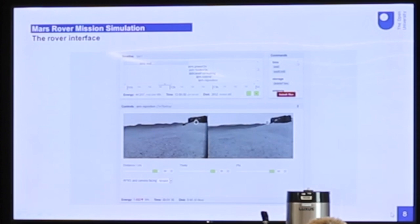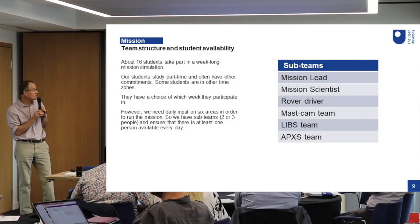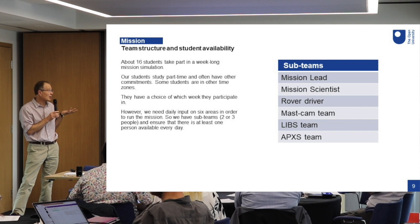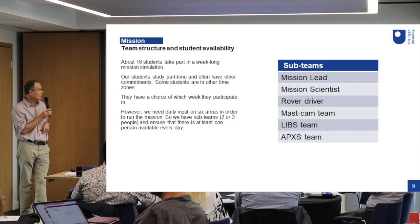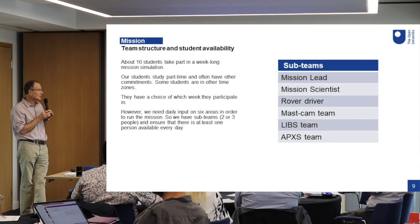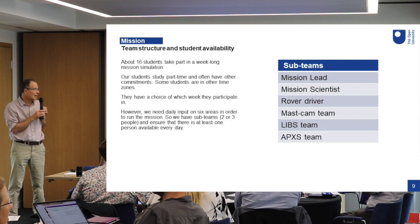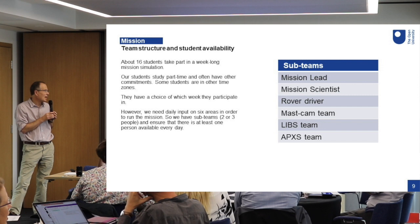So that's the interface to the rover. We take about 16 students for a week-long mission simulation. Remember, our students are part-time and usually have other commitments — we tell them well in advance they've got to give up a week to this, and we also have students from other time zones, so we design sessions so they can participate properly. There are three different cohort weeks. We have six areas in the mission: mission lead, mission scientist, rover driver, the MastCam team, the LIBS team, and the APXS team. Those 16 students are put into sub-teams to make sure somebody is available from each team on every day of the simulated mission.